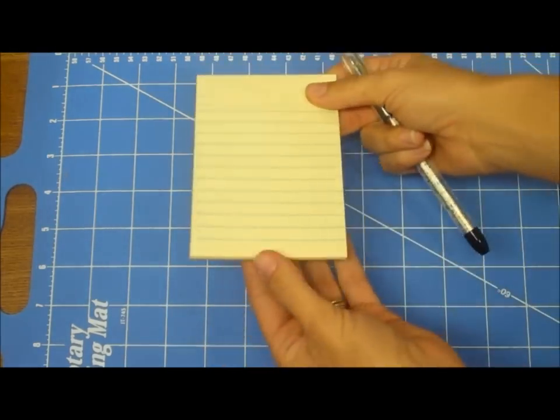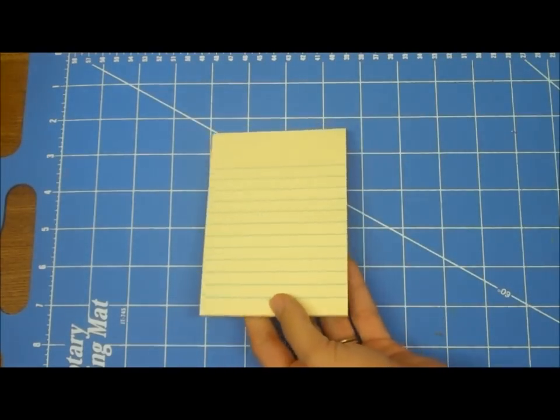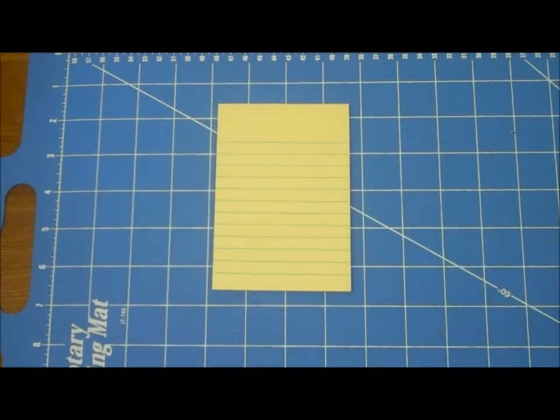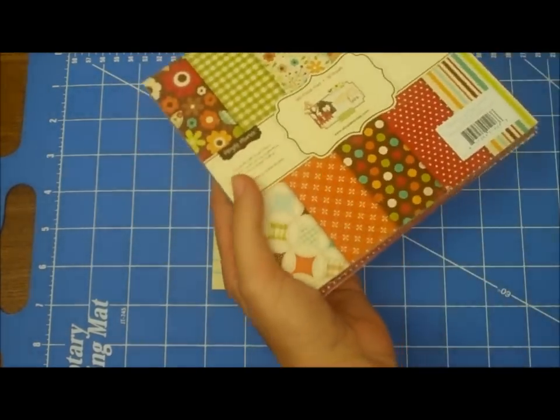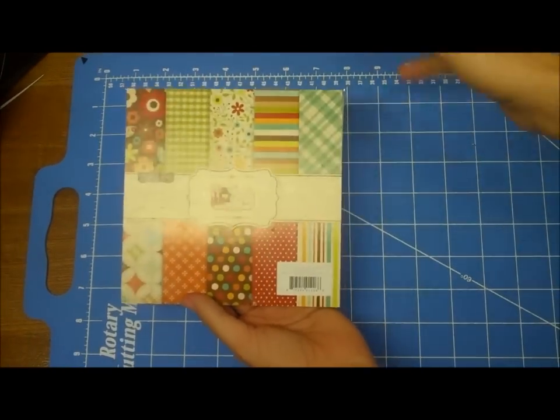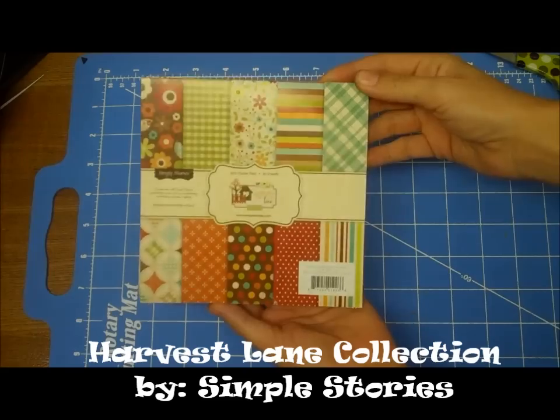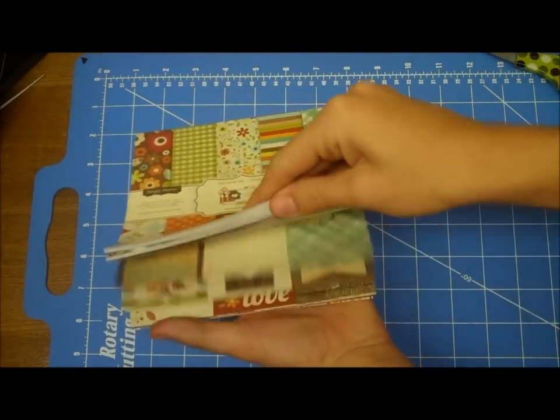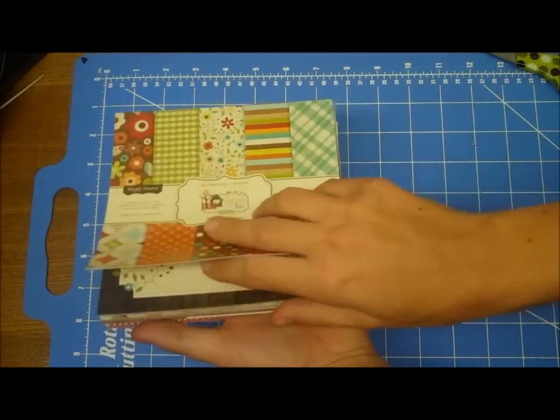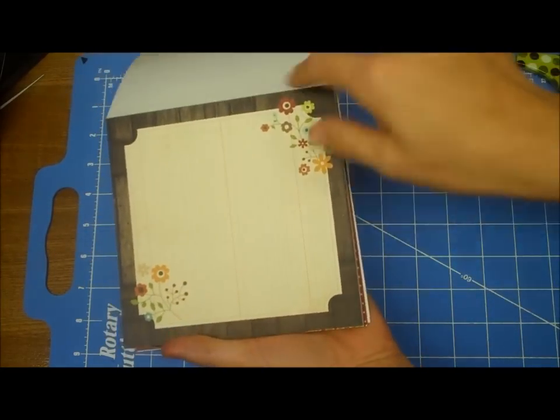I found these little notebooks at the dollar store and it came in a pack of three. And so, I am using the Harvest Lane Simple Stories paper pack. This thing just has so many cute fall patterns in it. I'm going to use this one.